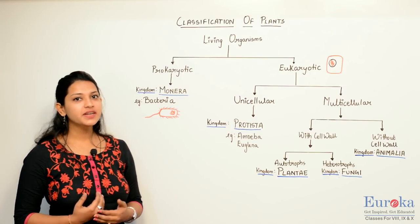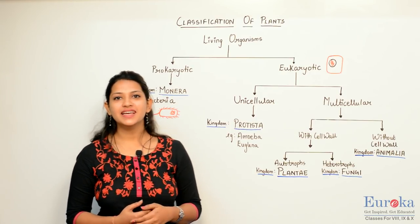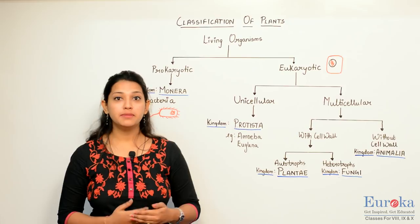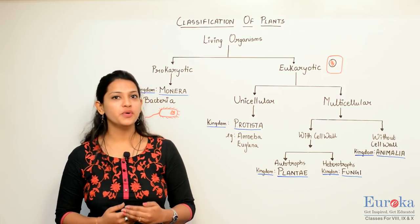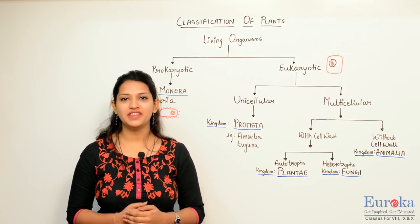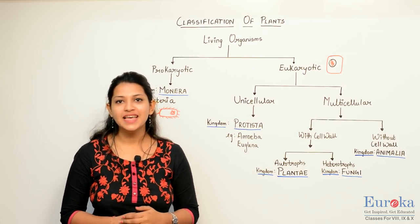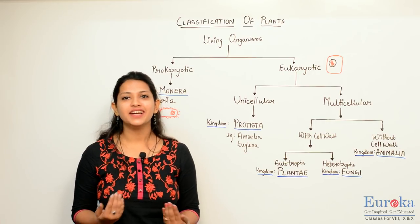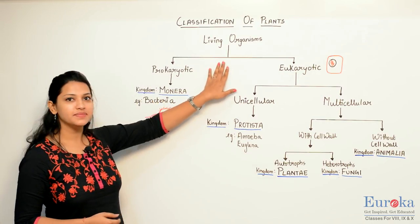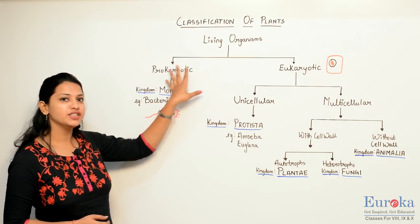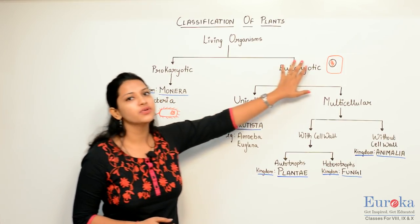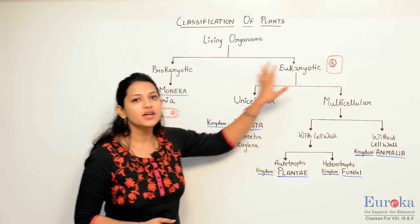Hello students. Today we are going to learn about classification of plants. Before moving forward, we look at the broad classification of living organisms as we have already done the five kingdom classification. Living organisms are classified into two types: prokaryotic cells and eukaryotic cells.